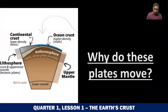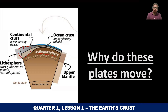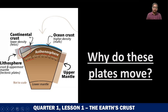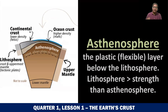Going back to this image, if you look beneath the lithosphere, this layer is actually sitting on top of another layer, which is the asthenosphere. The lithosphere is the strong layer, while the asthenosphere is the weak layer. The asthenosphere is found just beneath the lithosphere, and this layer allows the lithosphere to move because the asthenosphere is a plastic or flexible layer.